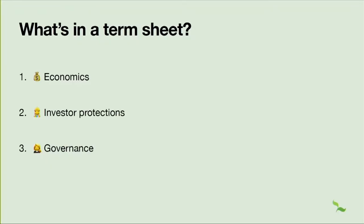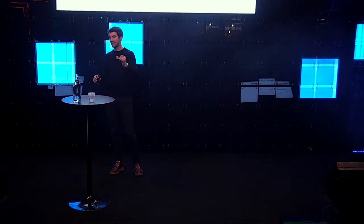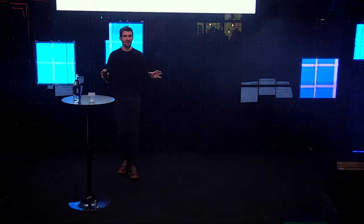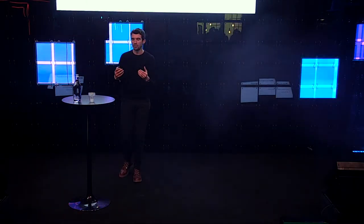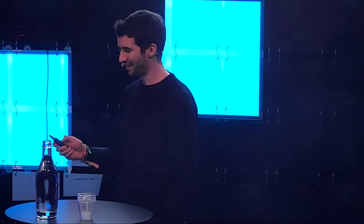Turning from what is a term sheet to what's in a term sheet — I've tried to simplify it into three broad buckets: areas covering economics, areas covering investor protections, and areas covering governance. My idea is to go into each of these, pull out a couple of clauses, and give some ideas of what to think about and what to look for when you've got a term sheet. I'm giving some tips away that might be used against me at some point, but happy to.